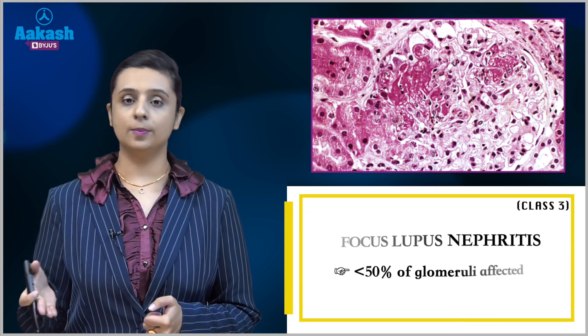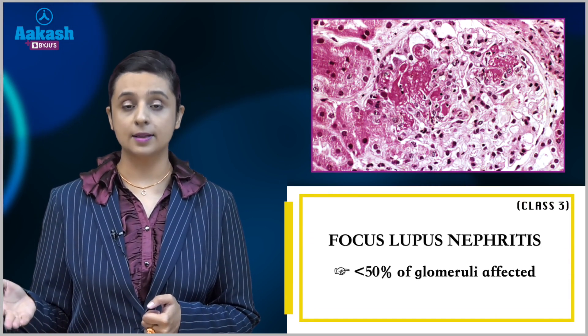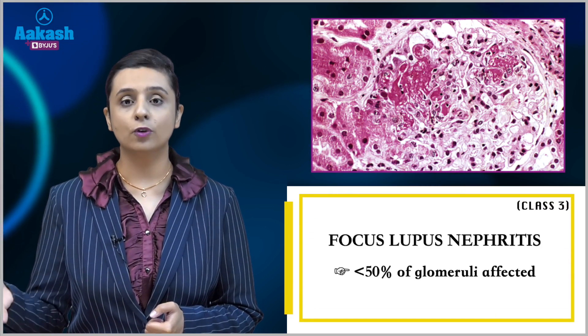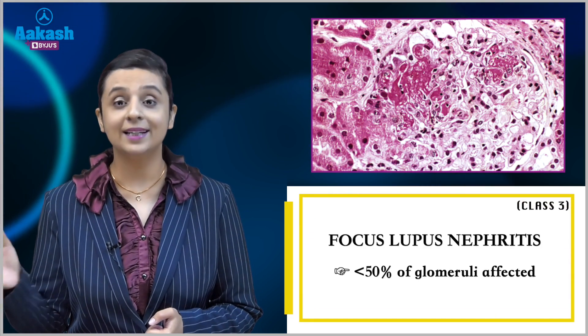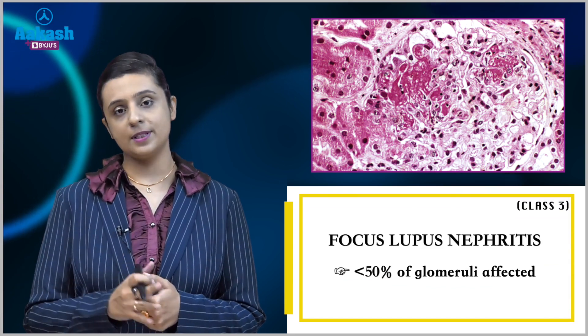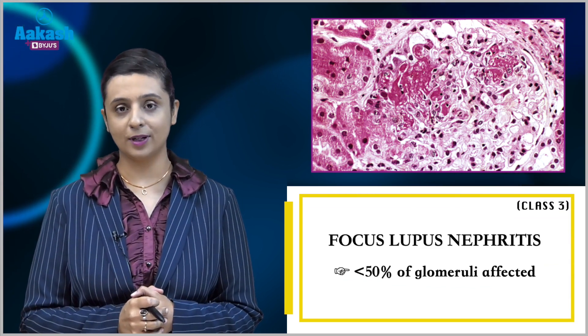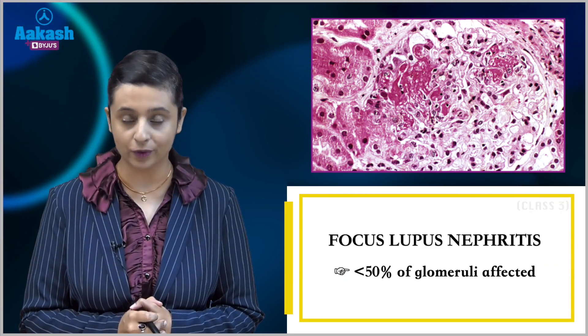Class 3 is focal lupus nephritis. The involvement is focal — less than 50% of the glomeruli will be involved.